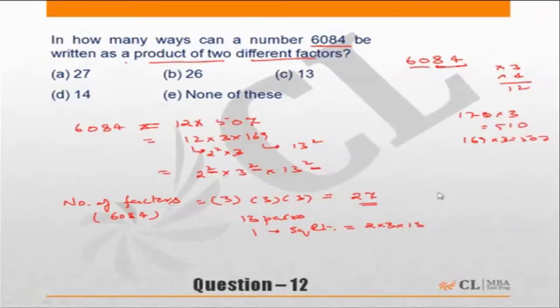When I say 13 pairs I mean 1 could be 1 and 6084. So this is a pair which multiplied will give me the original number. Another could be 2 into 3042. So out of the 27 factors, 1 is the square root. Eliminate that, you're left with 26 different factors which are nothing but 13 pairs. So the correct answer has to be choice C.